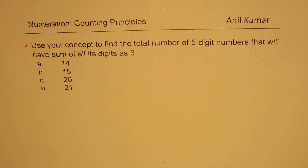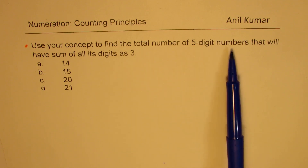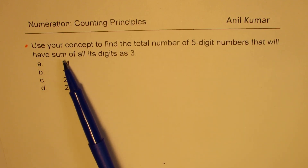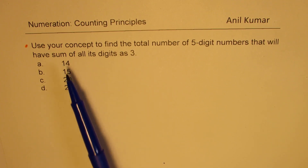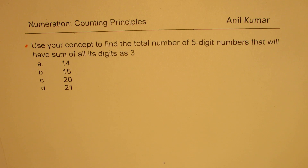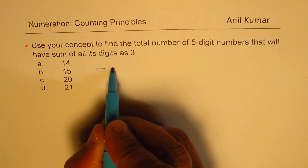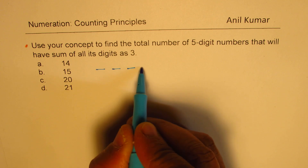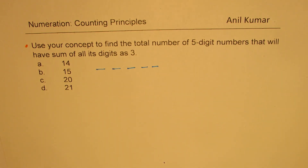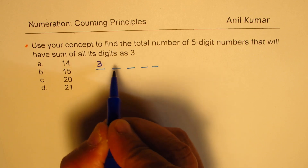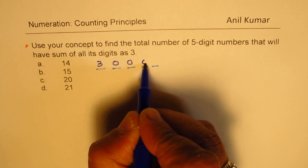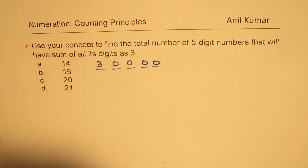Here is the modified second question with multiple choices. Use your concept to find the total number of five-digit numbers that will have sum of all its digits as three. You are given four options — you can pause the video, answer this question, and then look into my suggestions. So, as we did last time, one way for five digits is that we could have these five positions filled with three in the first position and the other digits being zero. So that is one way.